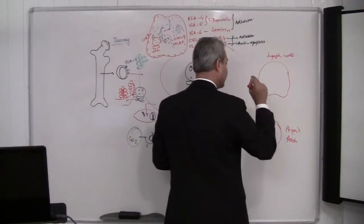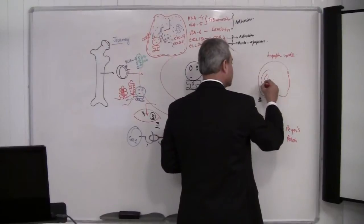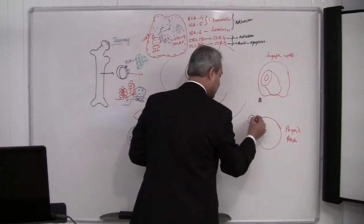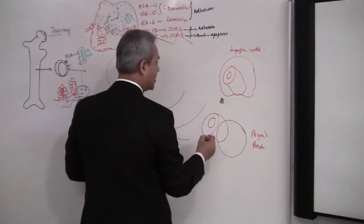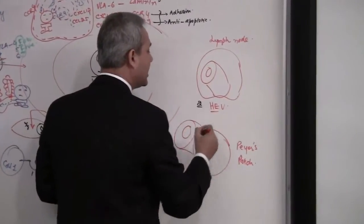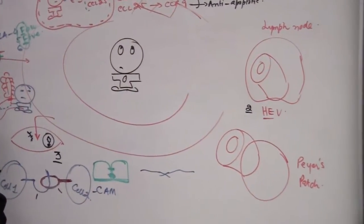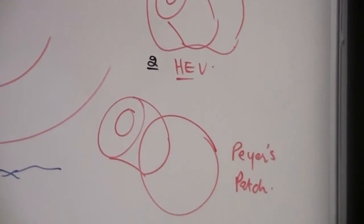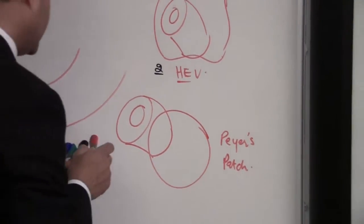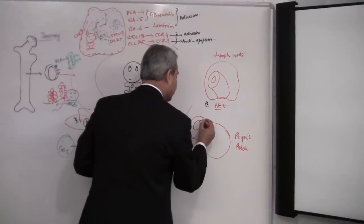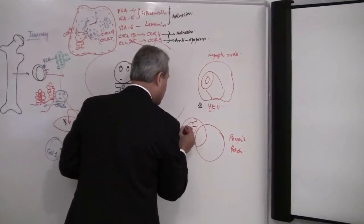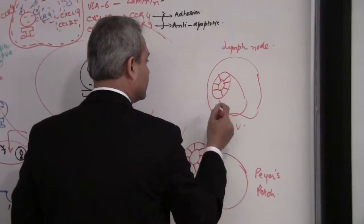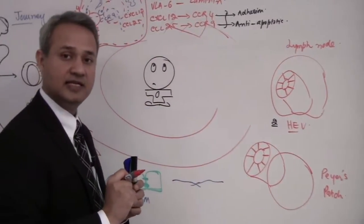A very important thing to note: the venules in these lymph nodes are called HEV — high endothelial venules. They are called 'high' because the venular cells are cuboidal and tall, as compared to other venules where the cells are squamous and short. These are cuboidal, tall cells.